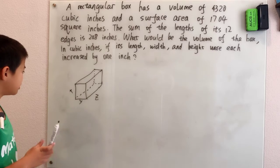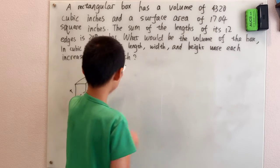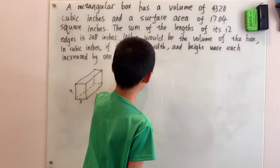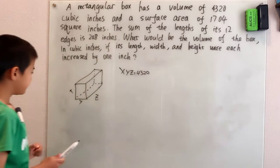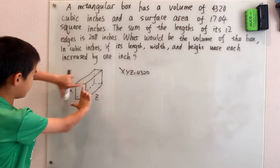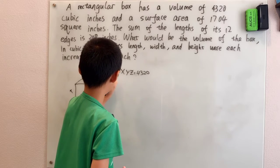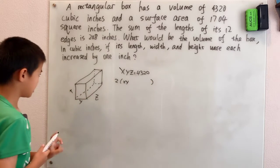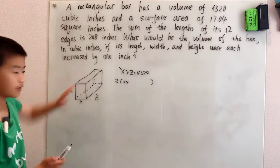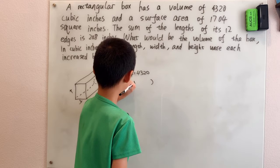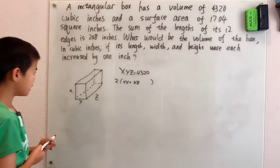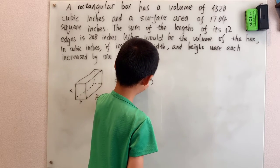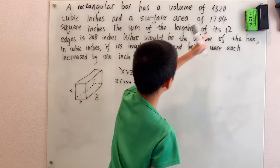So, volume 4320, that just means xyz is 4320. Okay, now the surface area. Now we have two xy's in the front and in the back. Two xy's. We have two xz's which are the faces that are on this side. And the faces on the top and the bottom, yz. That will make 1704.